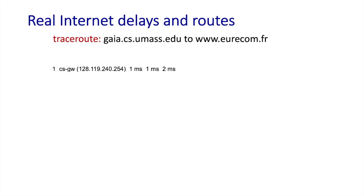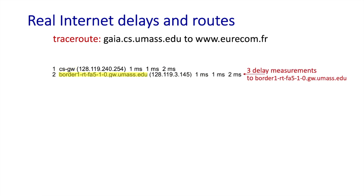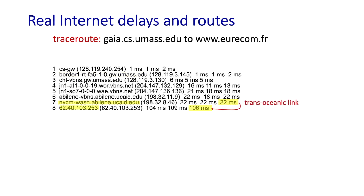This is the result of a Traceroute performed from gaia.cs.umass.edu in Amherst, Massachusetts to eurocom.fr in France. Traceroute first sends three packets to the first hop router in the computer science department network, with measured RTT delays of 1, 1, and 2 milliseconds. The second hop router is still inside the UMass network, with RTT delays again around 1, 1, and 2 milliseconds. Further along, we see a 22 millisecond RTT to a router in Washington, DC, and then over 100 milliseconds to a router in the Géant research network in France.